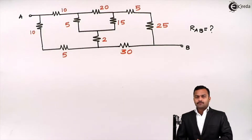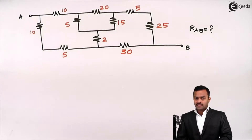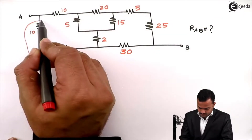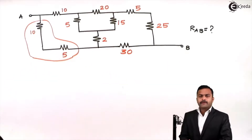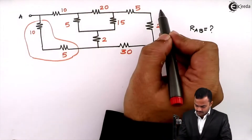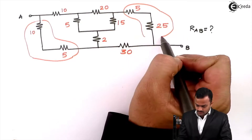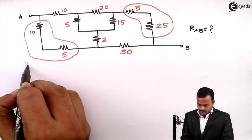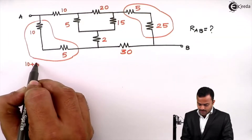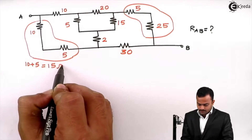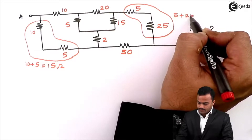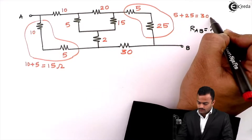So the first step is to figure out how many series and parallel combinations are available. If I see properly, I will get this series connection as well as this series connection. This will give me 10 plus 5 equal to 15 ohm, and here 5 plus 25 equal to 30 ohm.